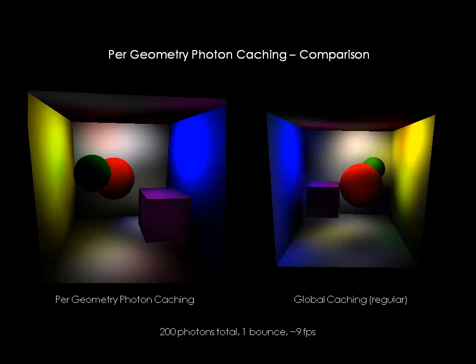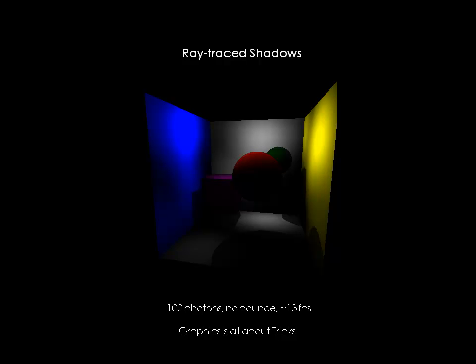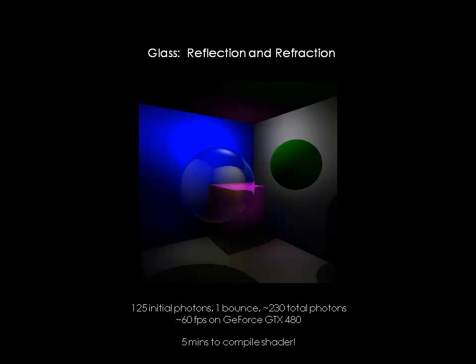Because photons are stored per object, the technique eliminates unwanted bleeding from nearby surfaces. In addition, there is also no need for an acceleration structure because radiance estimation simply includes all photons on the surface and the number of photons per surface is already small enough. To improve results, I added ray traced shadows. And finally, I added mirror reflection and refraction, as seen here on the glass ball.